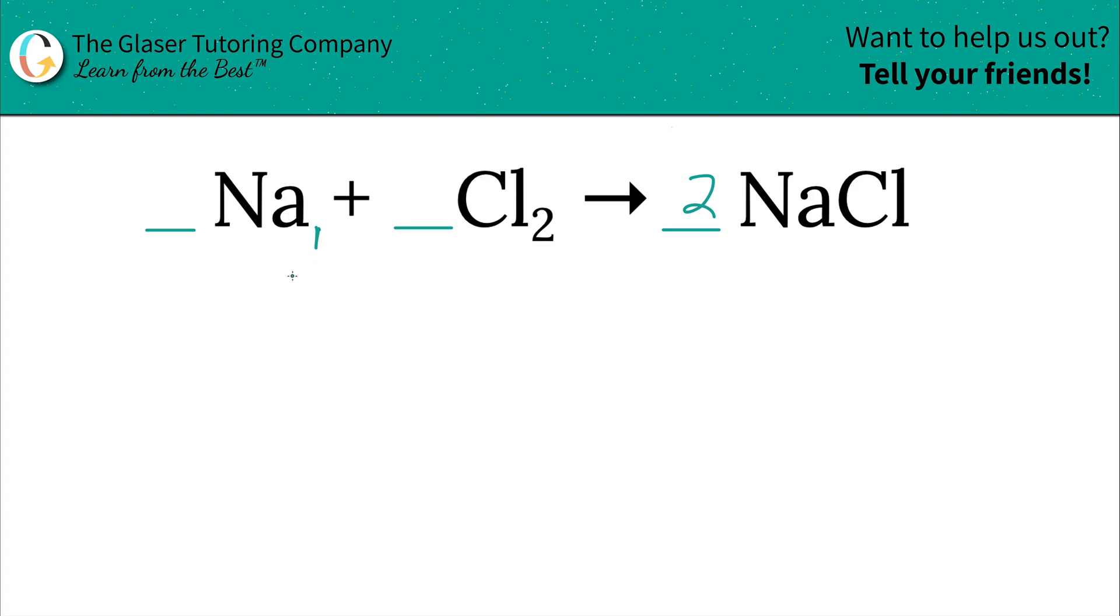So watch now, take a look at sodium. We have one sodium on the left and now we have, oh, we don't have one sodium on the right anymore because you have this coefficient, right? Two times one, you have a total of now two sodiums on the right.